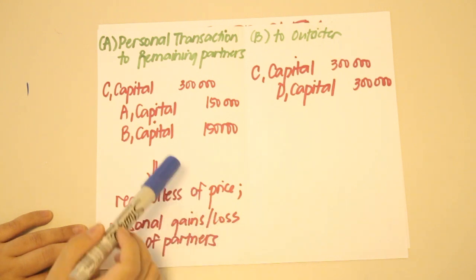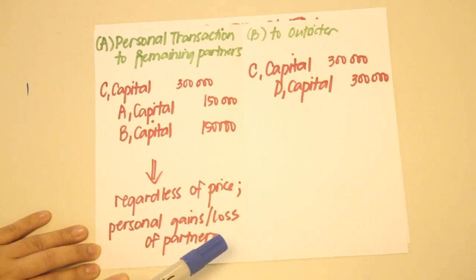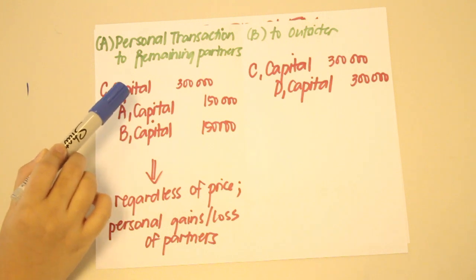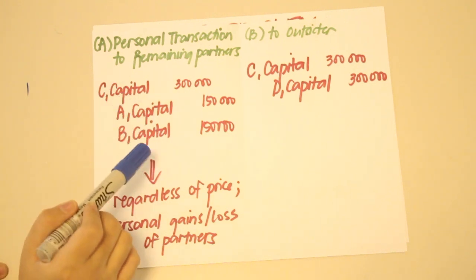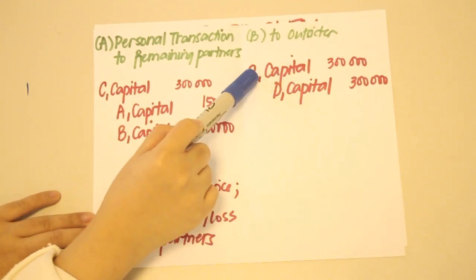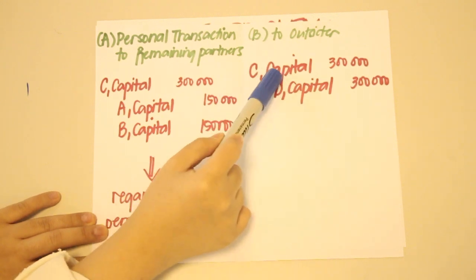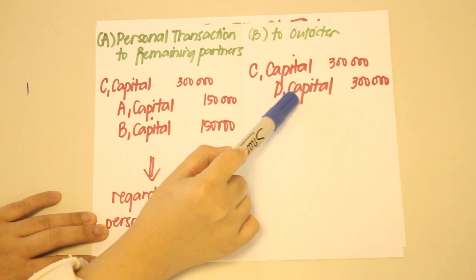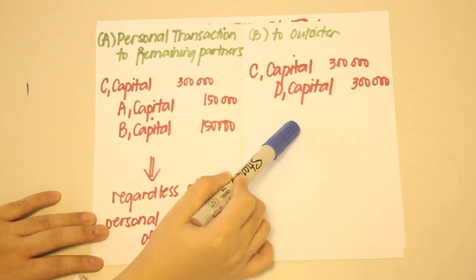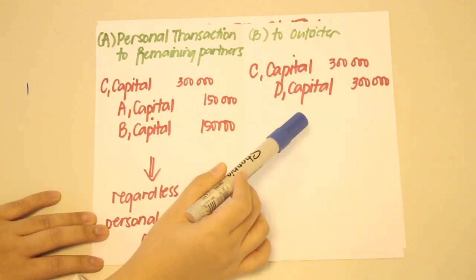This entry is made regardless of the price agreed on between A, B, and C, because any gain or loss is treated as a personal gain or loss of the partners. The partnership books only record the transfer of capital balances from C to A and B. When C sells his interest to an outsider, we simply debit C capital for 300,000 and credit D capital for 300,000 — again, the partnership is only interested in the transfer of capital balances, and in both cases there is no increase in total partnership assets.